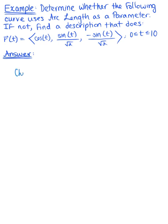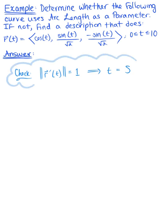Well, we need to check if the magnitude of the tangent vector is equal to 1. If so, then our arbitrary parameter t is equal to the arc length. So let's go ahead and start by checking this.